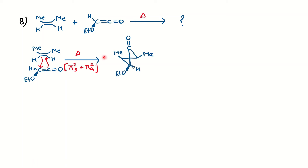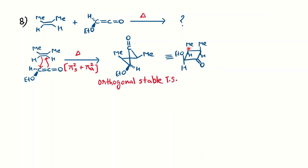The transition state is orthogonal. The ketene carbonyl, which is sp hybridized, is oriented on the more substituted side of the alkene to avoid steric crowding. Since there is no steric crowding from the carbonyl oxygen and carbon, it can easily approach the more substituted side. You have an orthogonal, stable transition state. The product has Me on the same side because you have a cis alkene, and OEt is above the plane — this is the final product.